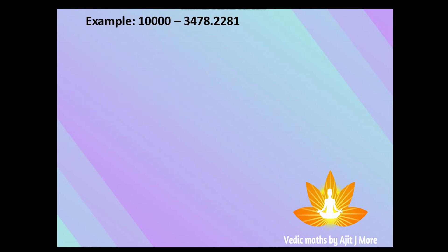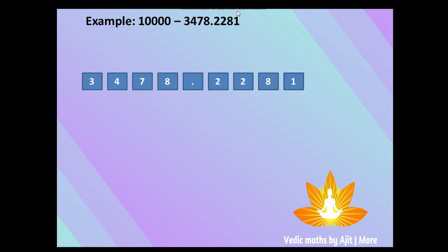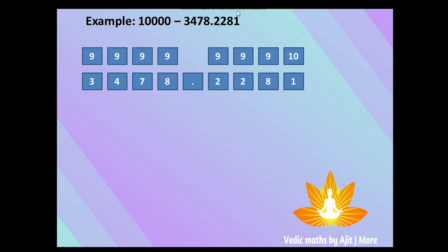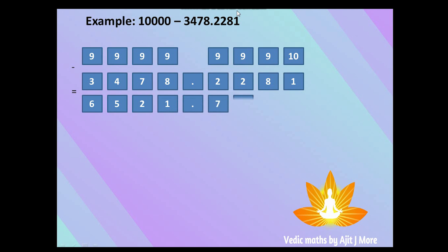Another example: 10000 minus 3478.2281. There are four digits before the dot, and four zeros in the base. Applying all-from-nine and last-from-ten: 9−3=6, 9−4=5, 9−7=2, 9−8=1, dot as-is, 9−2=7, 9−2=7, 9−8=1, 10−1=9. The complement is 6521.7719.